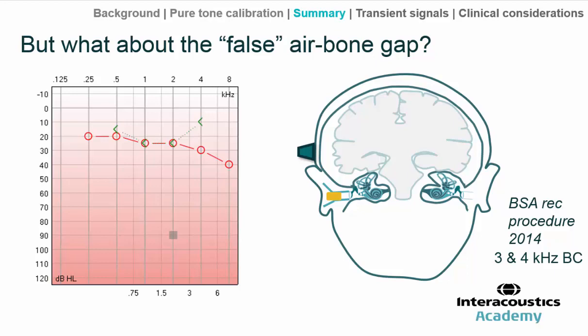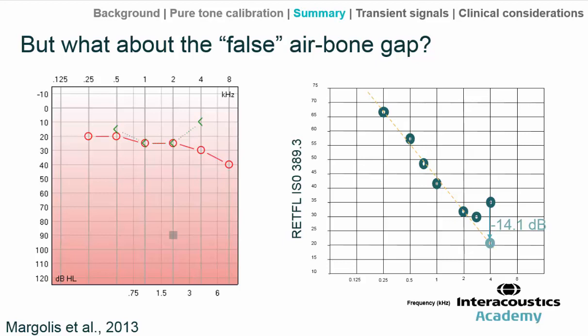So what might be the explanation? I'll refer you to this fascinating study by Margolis and others in 2013, which has really helped shed a lot of light on the situation. What these audiologists did was show the way in which the reference equivalent threshold force levels drop in a linear way as we increase in frequency. On the right side of the chart, frequencies are shown on the x-axis and the reference equivalent threshold force levels as published in the ISO standard on the y-axis.